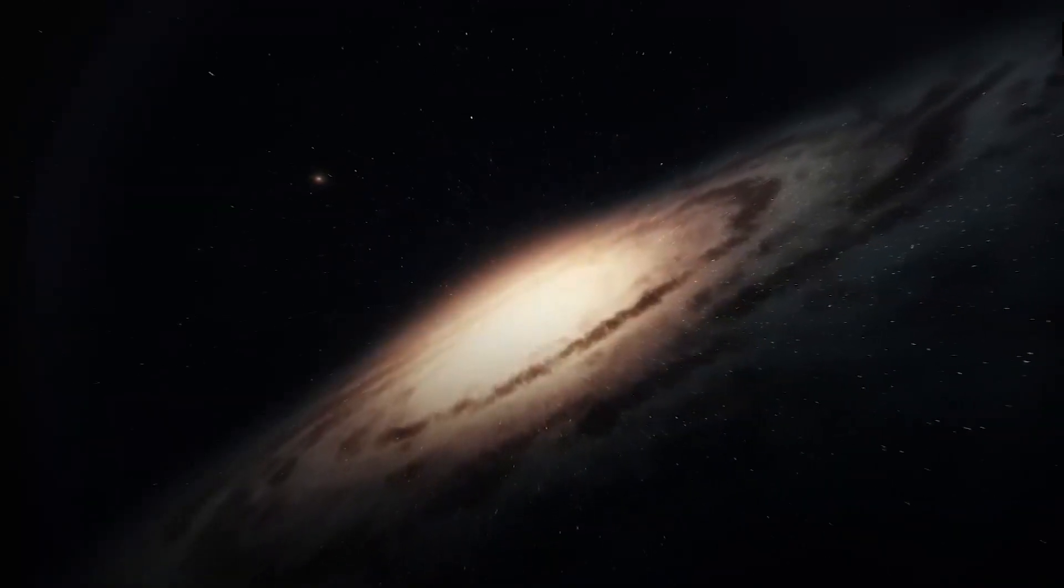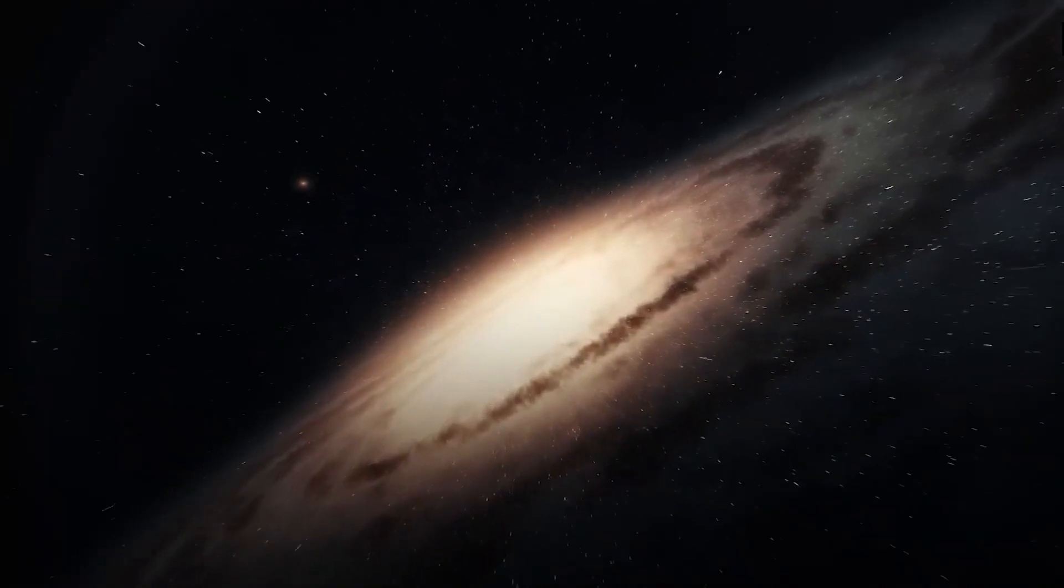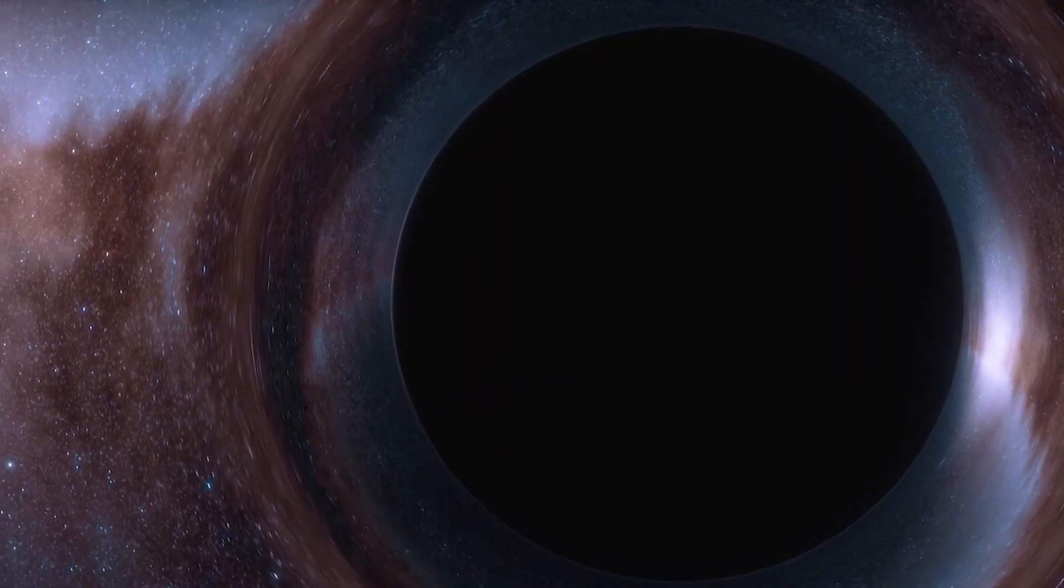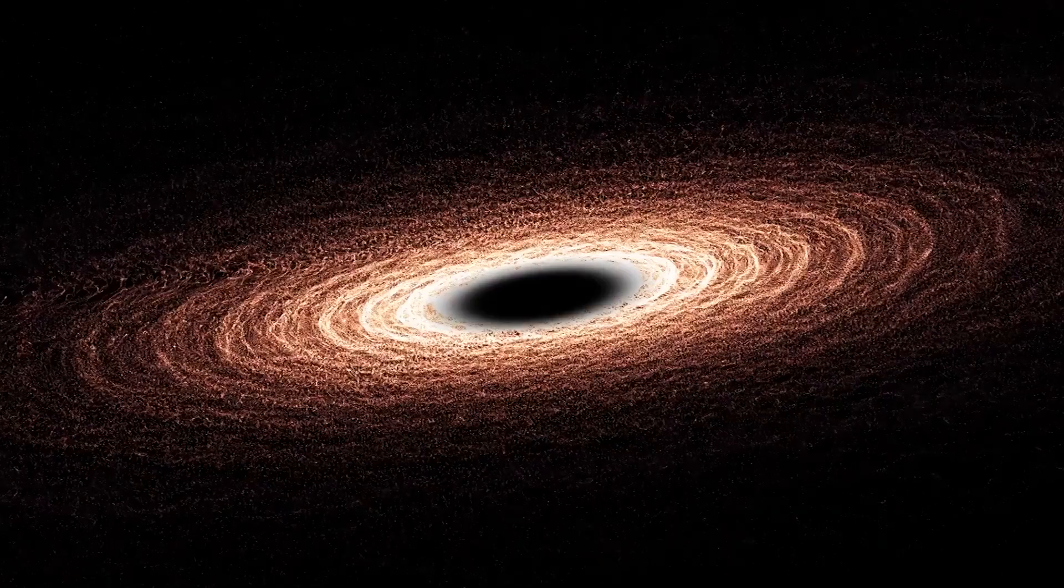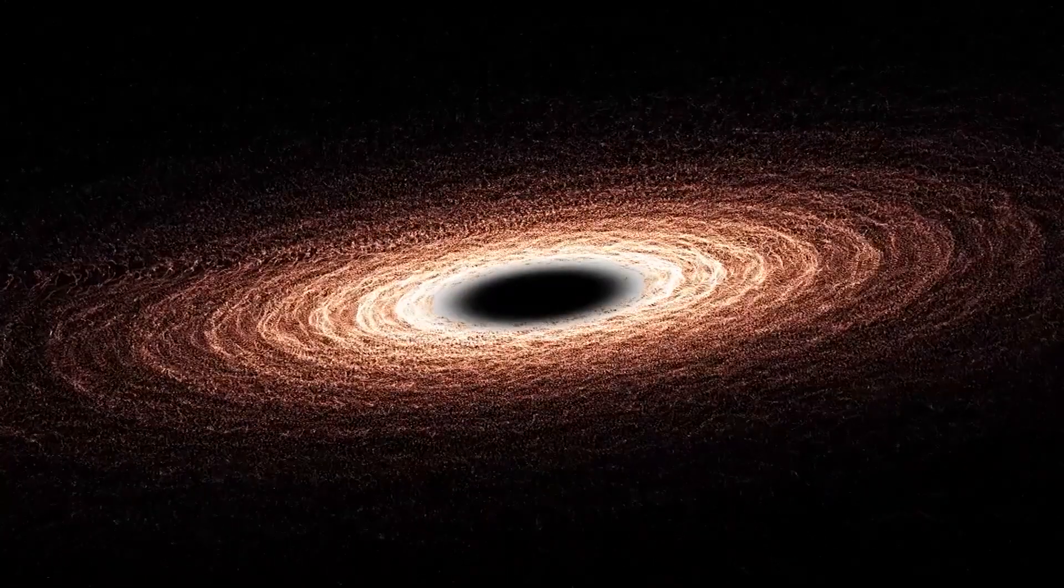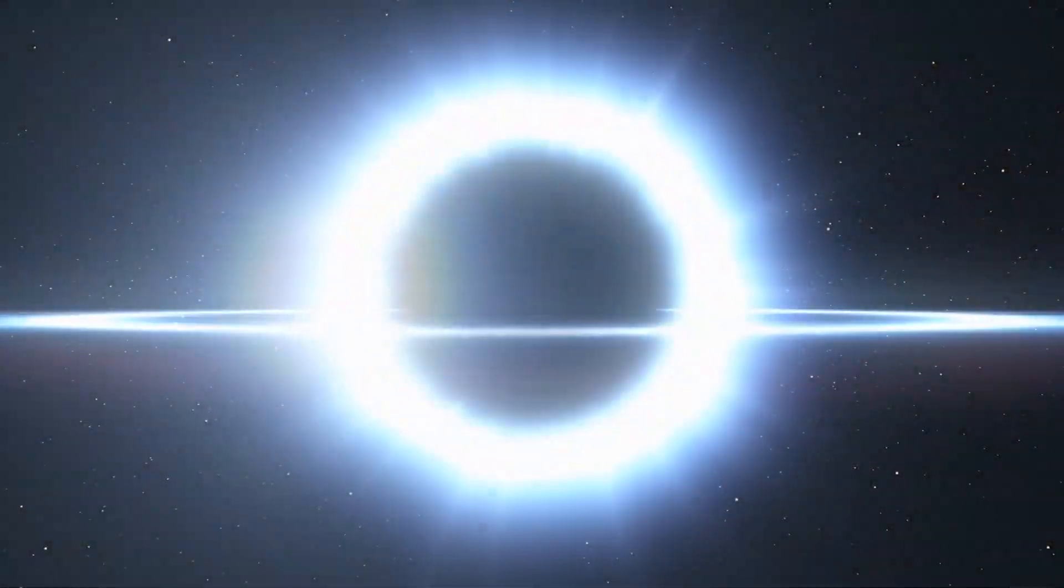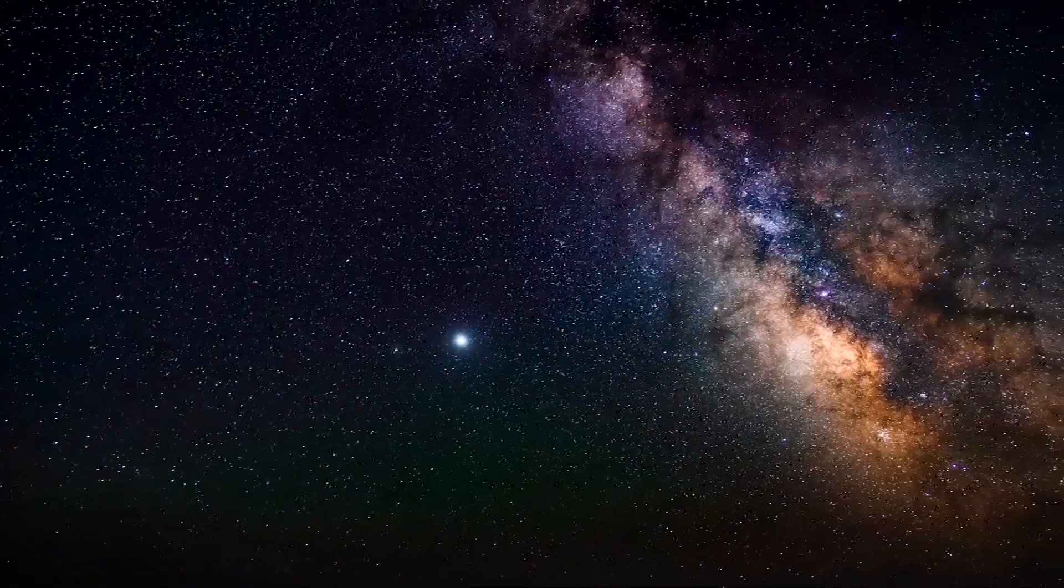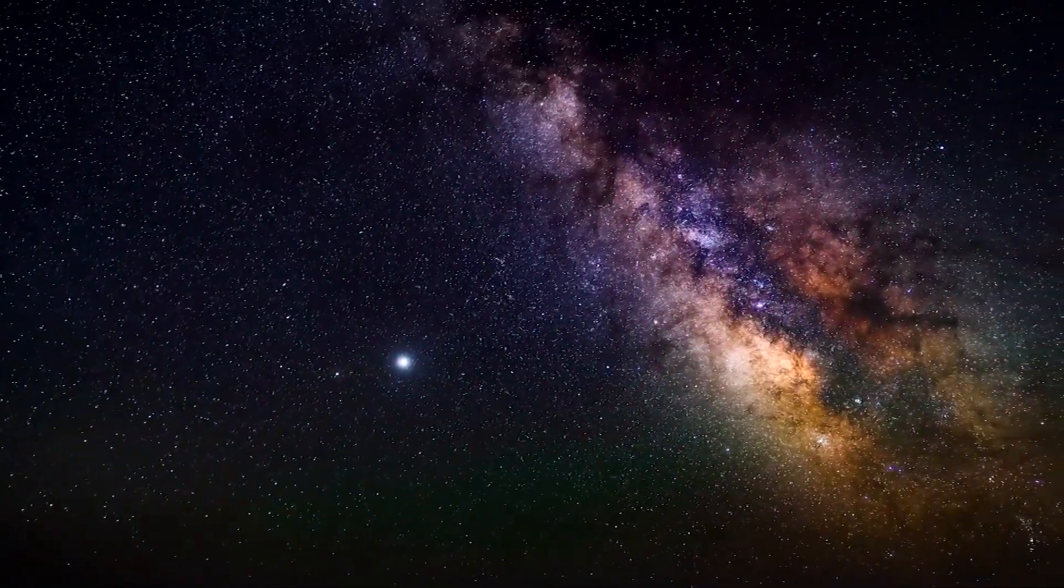According to NASA, a black hole is a place in space where gravity pulls so much that even light cannot get out. These astronomical objects have a gravity pull so strong that nothing can escape it. It has a surface called an event horizon, which defines the boundary where the velocity needed to escape it exceeds the speed of light, which is the technical speed limit of the cosmos.